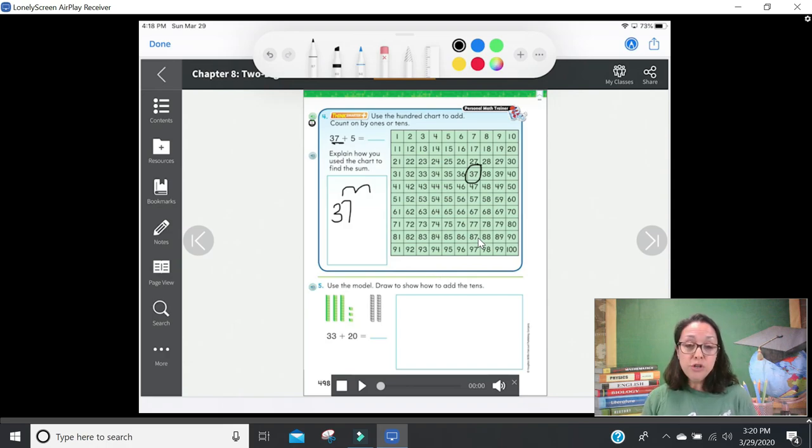Number five: use the model, draw to show how to add tens. Usa el modelo y escribe cómo puedes sumar decenas. The problem says 33 plus 20. In the box we are going to show how we added up those tens. It's asking about the tens. I see that there's three tens here and two here. Hay tres decenas y dos decenas, so I'm going to use that in my box to show how I added them. But please do not forget that there are three ones in there too. No se olviden que hay tres unidades también. Go ahead and draw in the box and write your answer on the line. When you're ready we're going to go on to the next page, page 499.